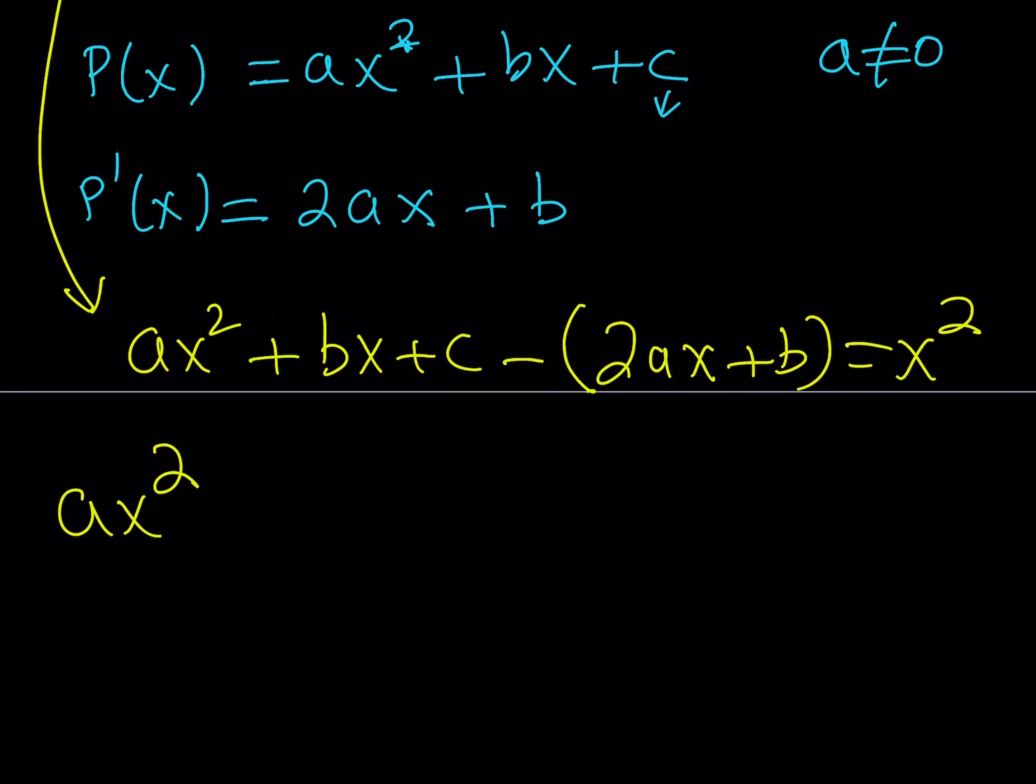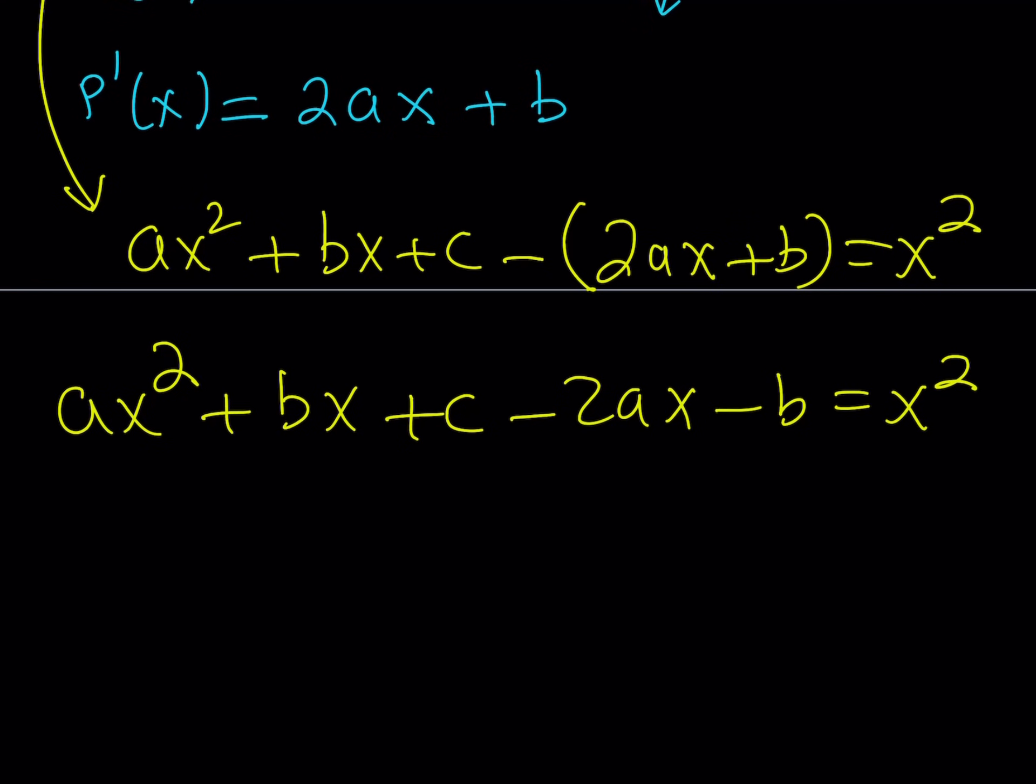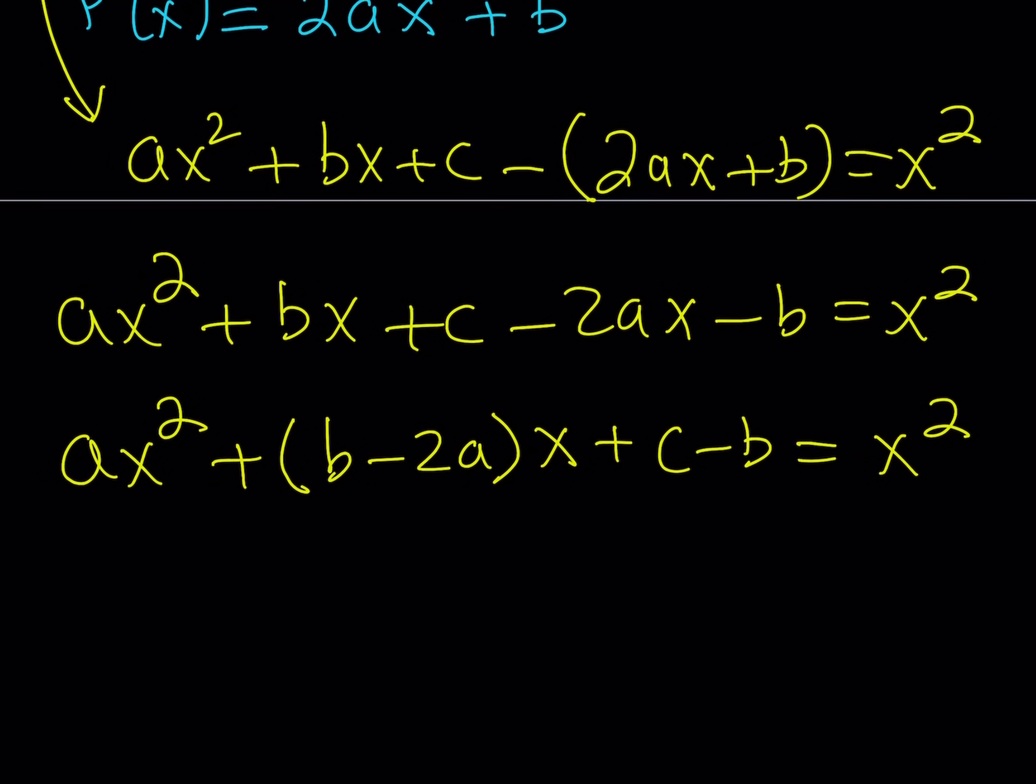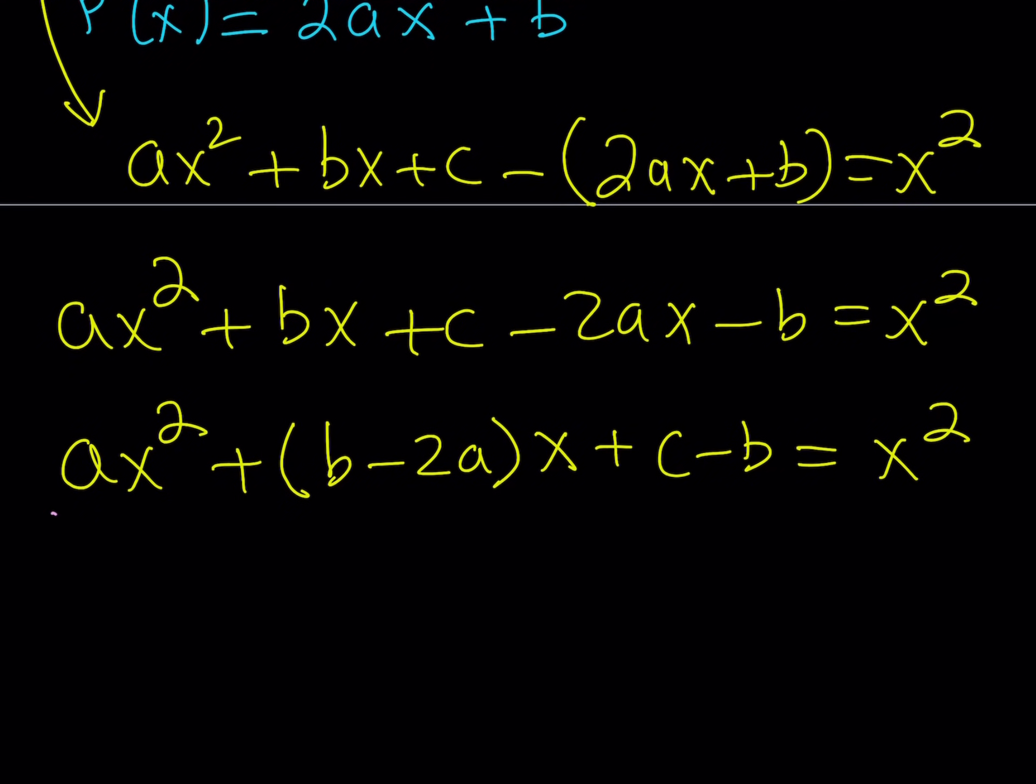ax squared is right there. Now I have bx plus c. If you negate everything in the parentheses, you're going to be getting negative 2ax minus b is equal to x squared. Now notice that both sides are polynomials, so they're true for all values of x, which are real in this case. So that gives us a really strong statement. So I can just go ahead and combine like terms here, the terms with x, and then of course the constants. So this is a super-duper powerful expression because this is true for all real values of x.